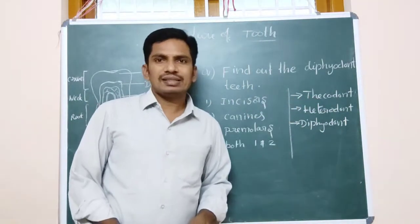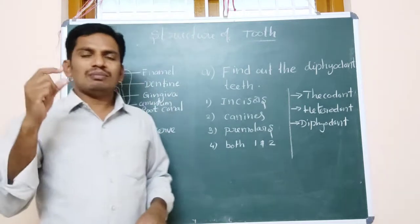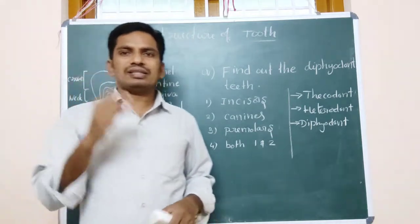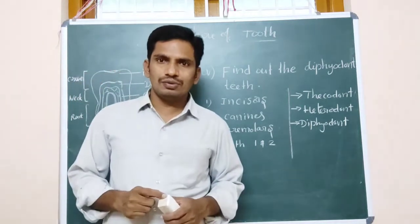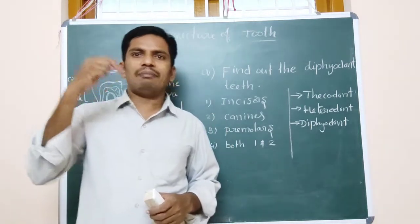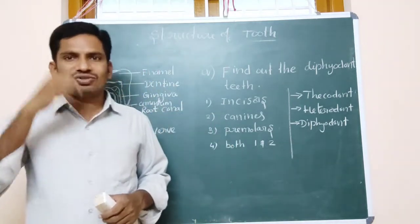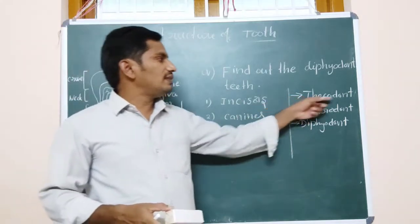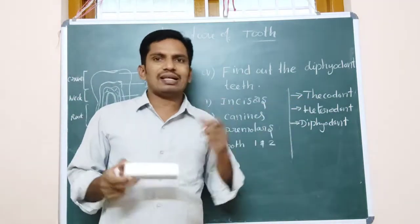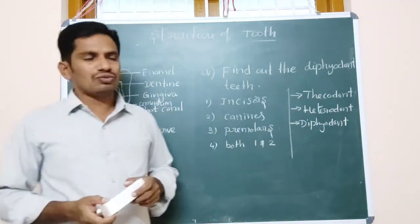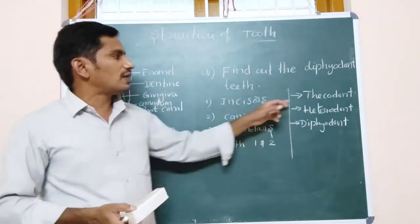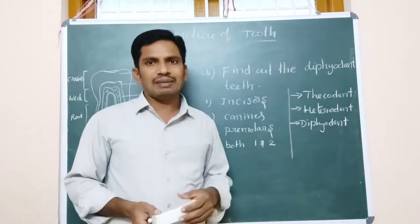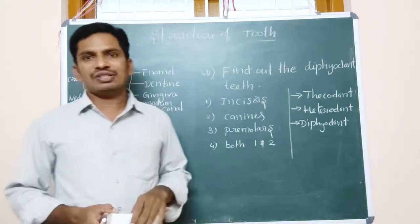Thecodont means the most portion of the tooth is embedded into the jaw socket. That's the reason our mammalian teeth belong to the thecodont type.